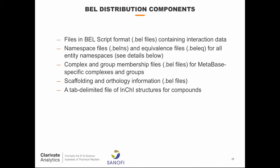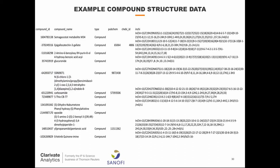What do we distribute to clients? Files in BEL format containing the actual interaction data. Namespace and equivalence files — equivalences are mappings between things like SwissProt and Entrez genes. We distribute our additions to the standard BEL distribution. Complex and group membership files. Scaffolding and orthology information where needed — all in BEL format. And then a simple tab-delimited file of INCHI structures that helps uniquely identify all of the compounds where needed.